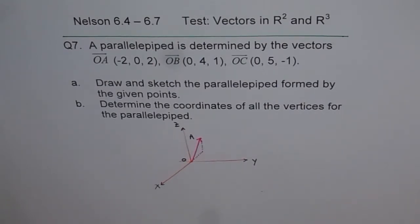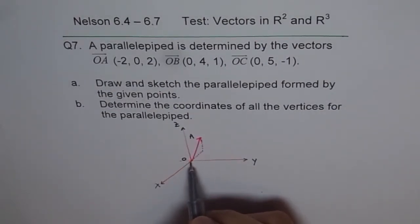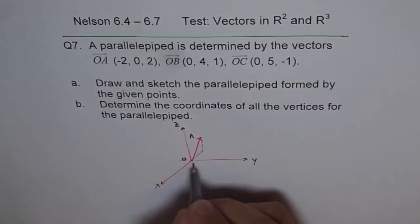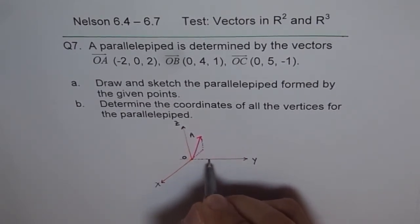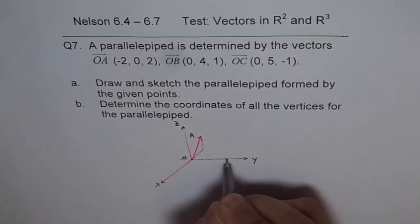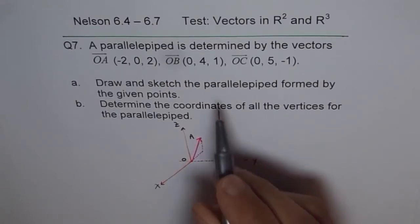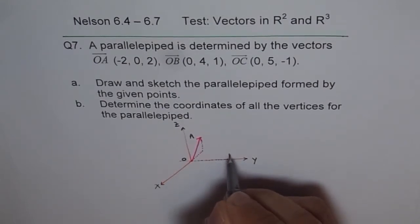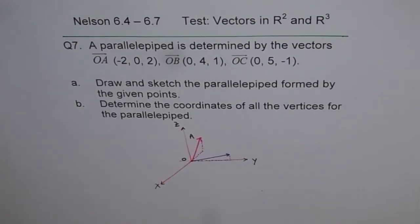Now let me use another ink to show you OB. OB is 0 along x, so you are at the origin itself, 4 along y. So 1 unit, 2 unit, 3 unit, 4 units along y, and then along z we have 1 unit. So that represents point B, and if I join this with the center it gives me point B. That's my OB.